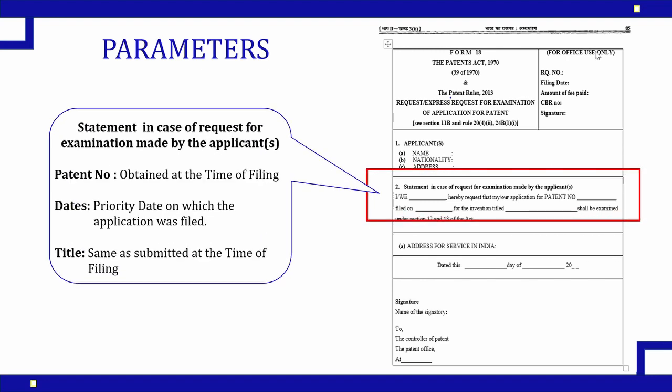The next column is very important. It is the statement in case of request for examination made by the applicant. It states: 'I/We hereby request that our application for patent number — .' The name of the applicant needs to be mentioned here. If there are multiple applicants, every applicant's full complete name needs to be mentioned here. Next is the patent application number, which you would have received after filing your application — this needs to be mentioned here correctly.